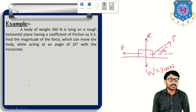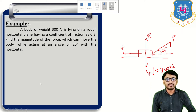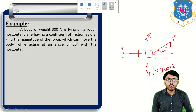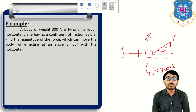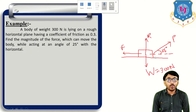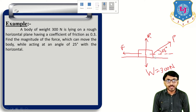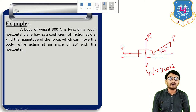In this example there is one block lying on a rough horizontal surface. The weight of the block is given as 300 Newton and the coefficient of friction, which is equal to mu, is 0.3. We need to find the magnitude of the external force which can move the body while acting at an angle of 25 degrees with the horizontal.